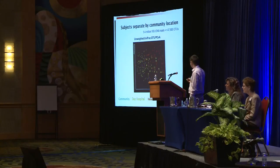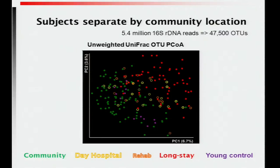This is a multivariate plot of the dataset. The green samples are our community samples, and the red up here are our long-stay individuals. There's quite a good separation between the people living in the community and those in long-stay based on their microbial composition. The young controls in purple cluster with the community, and we have individuals in day hospital and rehab who form these intermediate groups.